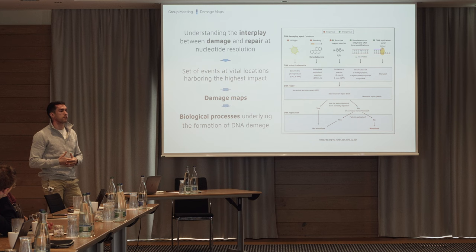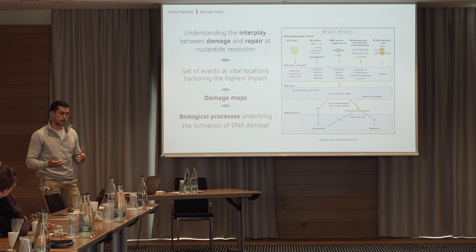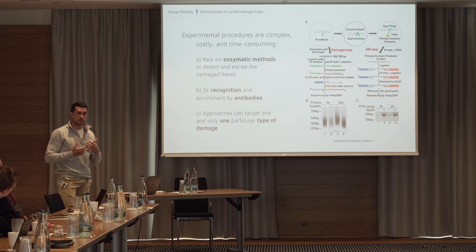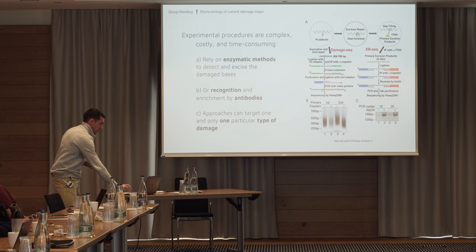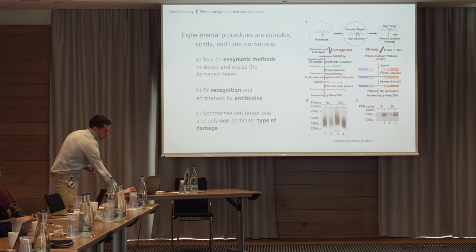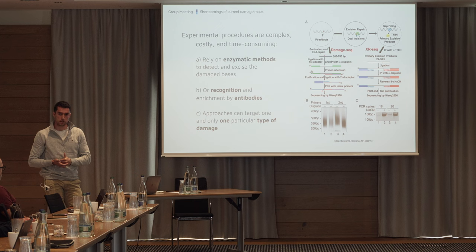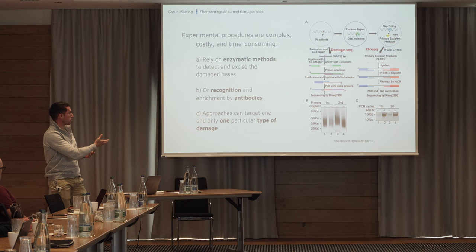One of the building blocks we have to understand, to position DNA damage on the genome, is to use damage maps. Basically, that can give us information about the biological process underlying the formation of this DNA damage. These DNA damage maps have given us an enormous amount of information for alkylating agents, UV light, etc., and have helped us extensively. However, those experimental procedures are complex, costly, and time-consuming—involving many steps, immune precipitation, enzymatic methods, and recognition with different antibodies. On top of that, with any one of those methods, you can only detect one type of damage.